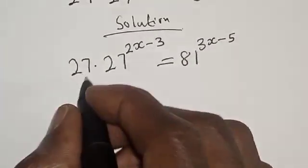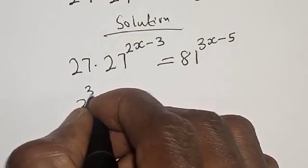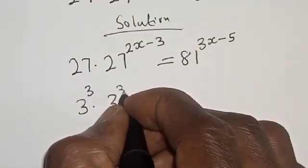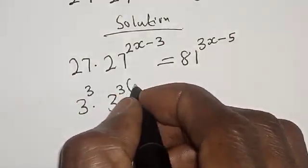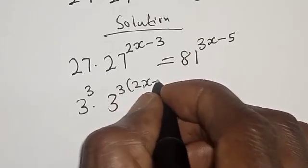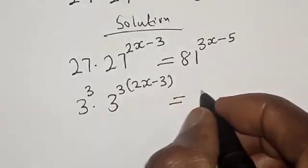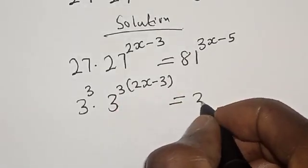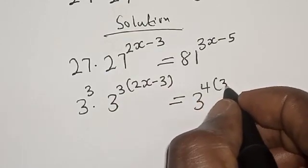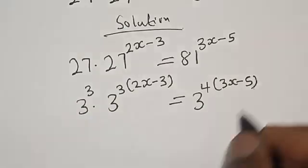Then 27 is the same thing as 3 raised to power 3, multiplied by 3 raised to power 3 into 2x minus 3, is equal to 81 — which is 3 raised to power 4 — into 3x minus 5.